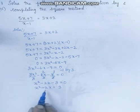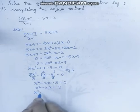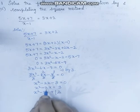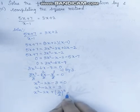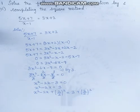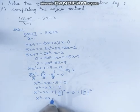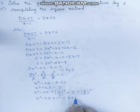Next, we take the coefficient of the x term, divide by 2, square it, and add it to both sides. So: x square minus 2x plus (2 divided by 2) whole square is equal to 3 plus (2 divided by 2) whole square. This gives x square minus 2x plus 1 square equals 3 plus 1 square.